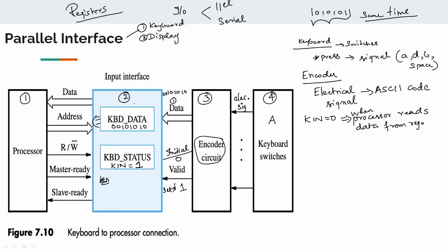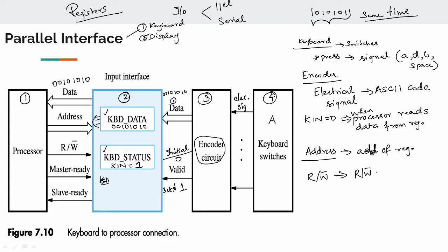Now, the processor sends data via the address bus. In the CPU there are different registers, and the address is decoded. The processor also sends read bar and write bar control signals. These are control signals.